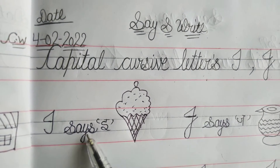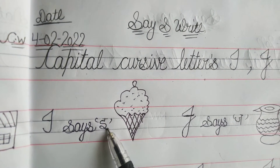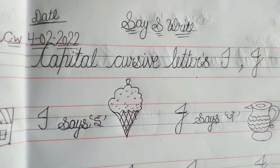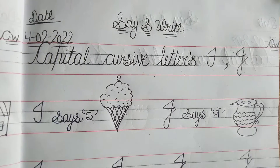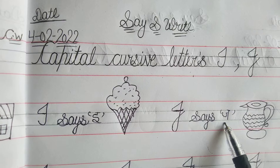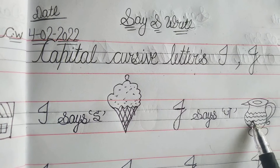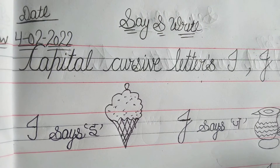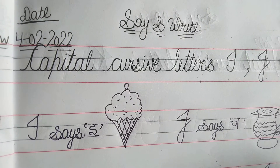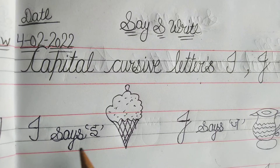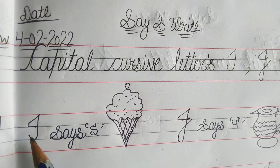I says E — ice cream. J says J — jerk. So now let's start how to write capital cursive letter I.